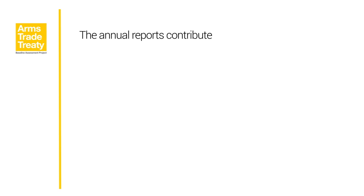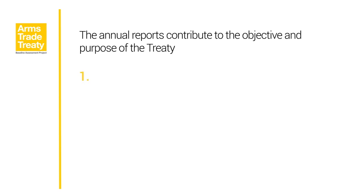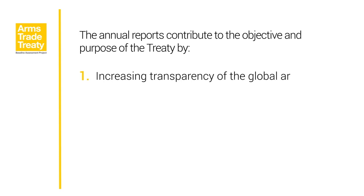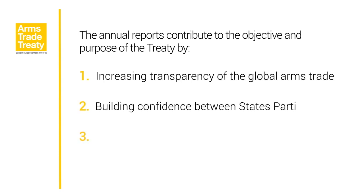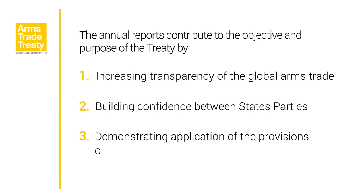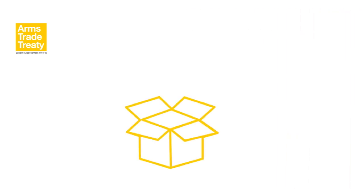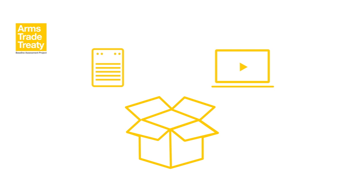The annual reports contribute to the objective and purpose of the Treaty by increasing transparency of the global arms trade, building confidence between states' parties, and demonstrating application of the provisions of the ATT. This training package, which includes a video and guidance notes, can facilitate the completion of a state's annual report on arms exports and imports. The online training and guidance notes provide advice for compiling information, such as the potential sources of information, and assistance in determining which conventional arms to report.